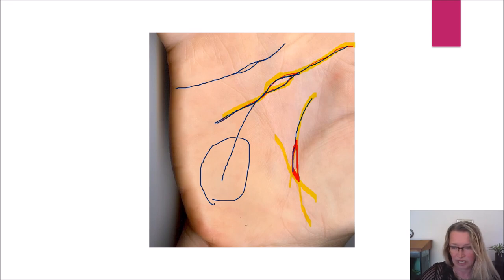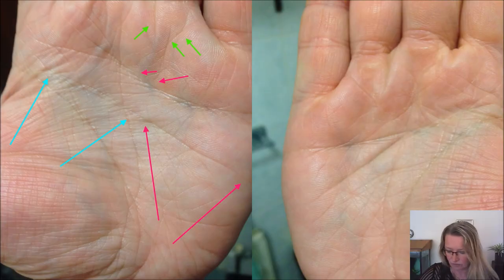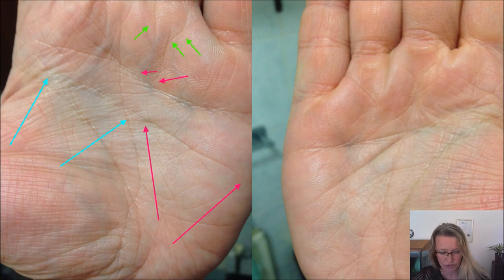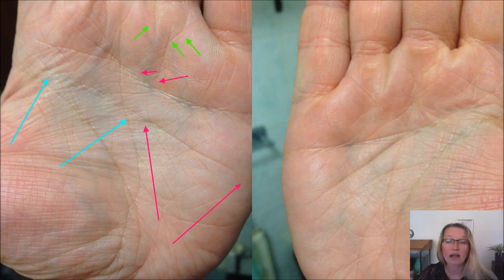This person that has asked for the reading originally asked for a reading about the marriage lines, which I will do as well. But the most important thing to me in this example reading was the person's islands. So I will talk about them first, and then I will show you the marriage lines as well.